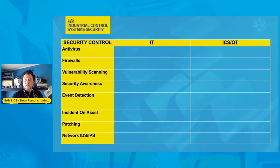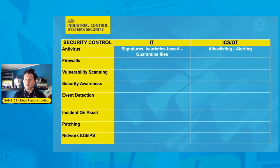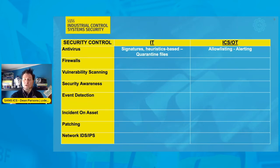Starting out with antivirus in IT, the approach has really been signature-based, heuristics-based antivirus. Malicious activity or files are found and then quarantined or removed from the system. In the ICS, however, the approach is allow listing or alerting only, not necessarily finding malicious activity and outright deleting them from the system. This reduces the amount of false positives that can directly impact the control environment.